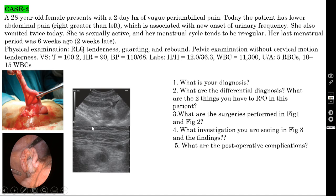What is your diagnosis? This is acute right lower quadrant pain. You have to think of the commonest cause first, which is of course acute appendicitis. This picture is also showing the appendix — so this is acute appendicitis.